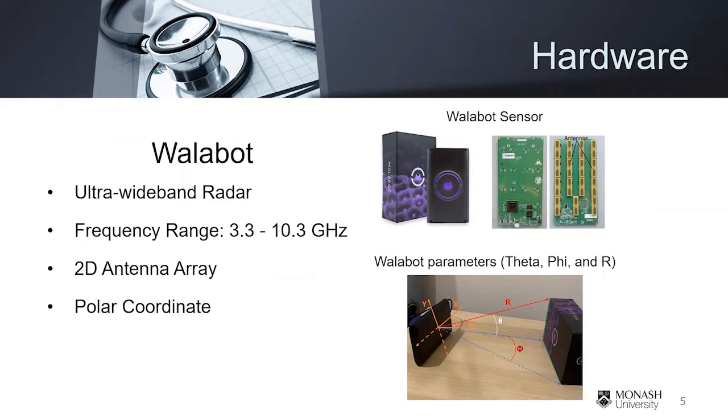It contains a 2D antenna array to produce and receive radio frequency waves. And according to the received signal and the polar coordinates of the device, a 2D or 3D heatmap can be generated representing the moving object in the detecting range. By adjusting the polar coordinate parameters theta, phi, and r as shown at the bottom right picture here, we can precisely control the detection range in 3D space. Theta and phi contribute to the area of the detecting plane parallel to Walabot, and r determines the distance of the detecting plane to the Walabot.